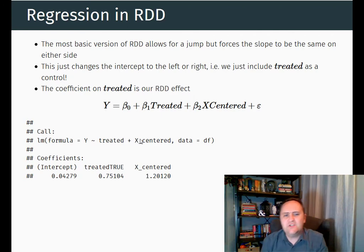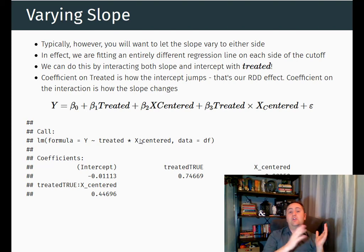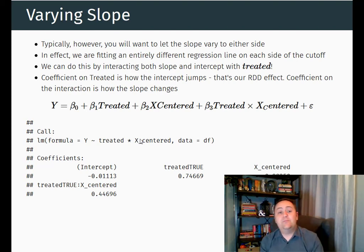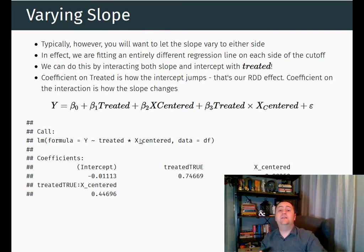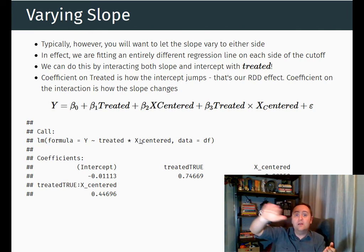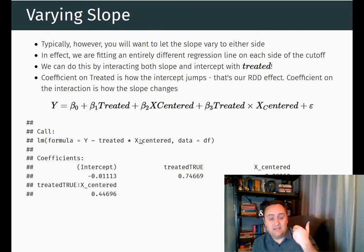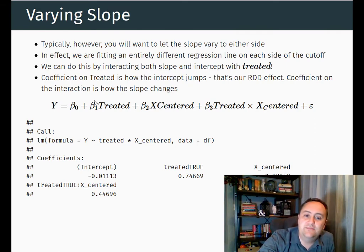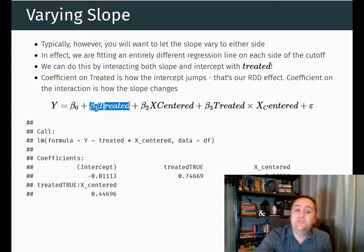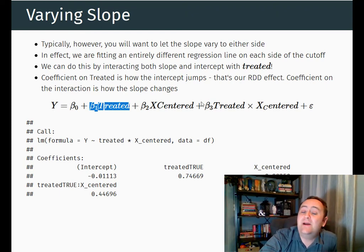Then we're going to take this regression line and just interact it with treated — treated being you're above the cutoff. So if you think about our regular regression line, we would have y = beta_0 + beta_1 * x_centered — that would be if we fitted a single line across the entire graph. But what I want to do is fit two lines. So I'm going to give the treated people on the right side of the cutoff their own intercept — adding beta_1 times treated — and I'm going to give them their own slope by multiplying x_centered by treated as well.